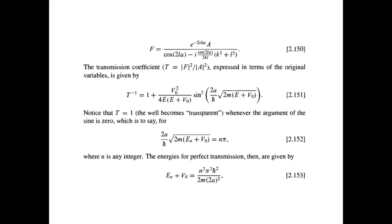We get F in terms of A. Physically, F divided by A represents the transmission coefficient, where A is the incoming amplitude and F is the transmitted amplitude. From this equation we can find the modulus of F-squared over A-squared, and we find the inverse of the transmission coefficient to be this value.